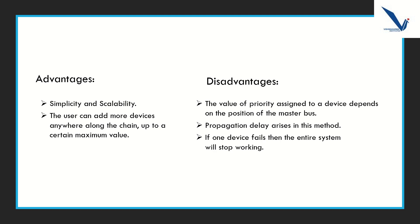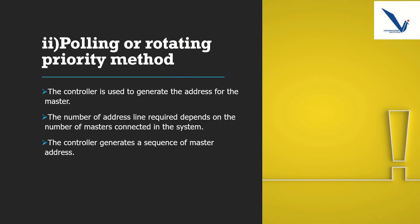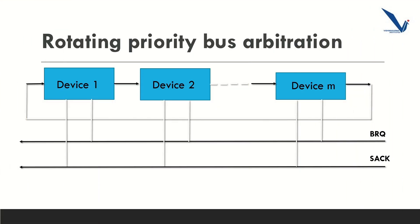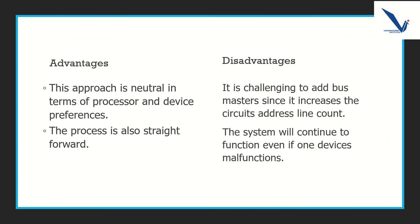The polling or rotating priority method. In this, the controller is used to generate the address for each master's unique priority. The number of address lines required depends on the number of masters connected in the system. The controller generates a sequence of master addresses. When the requesting master recognizes its address, it activates the busy line and begins to use the bus. Advantages: the method does not favor any particular device or processor, and the method is also quite simple. Disadvantages: adding bus masters is difficult as it increases the number of address lines of the circuit. If one device fails, the entire system will not stop working.